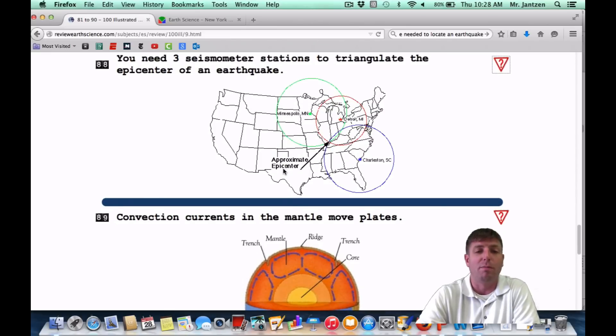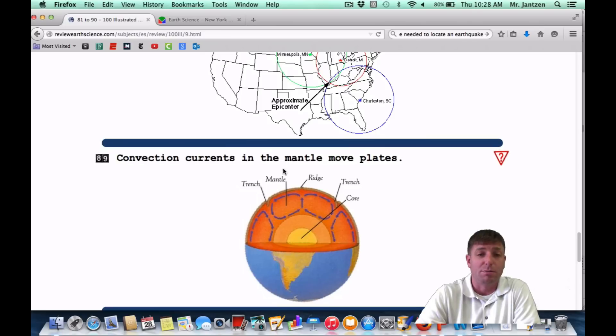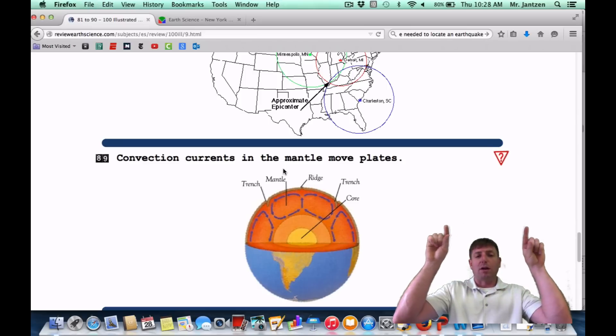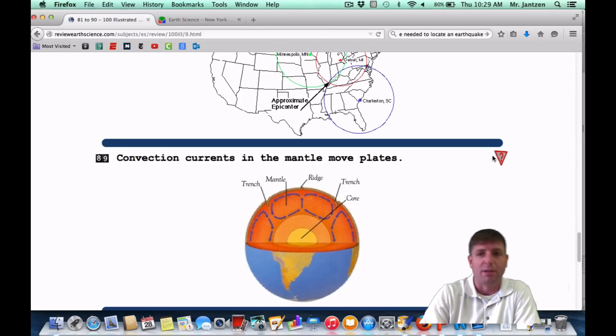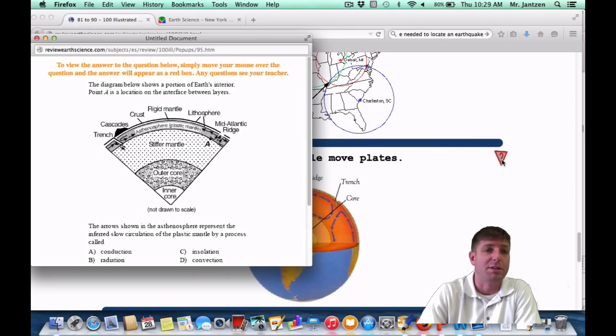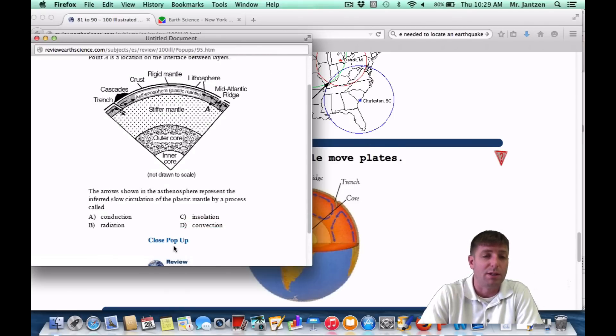Number 89: convection currents in the mantle move plates. This is the driving force behind plate tectonics. The fact that you have hot liquid rock rising and then cold rock sinking. This kind of circular movement, a lava lamp is a great example of how convection works. You have the hot wax heating up, rising up, cooling off, and sinking back down again. Convection is the engine that moves plate tectonics. As a regents question, it may appear something like this: the diagram below shows a portion of Earth's interior. The arrows shown in the asthenosphere represent the inferred slow circulation of the plastic mantle by a process called what? So we're talking about these arrows here. We're talking about convection, or choice D.